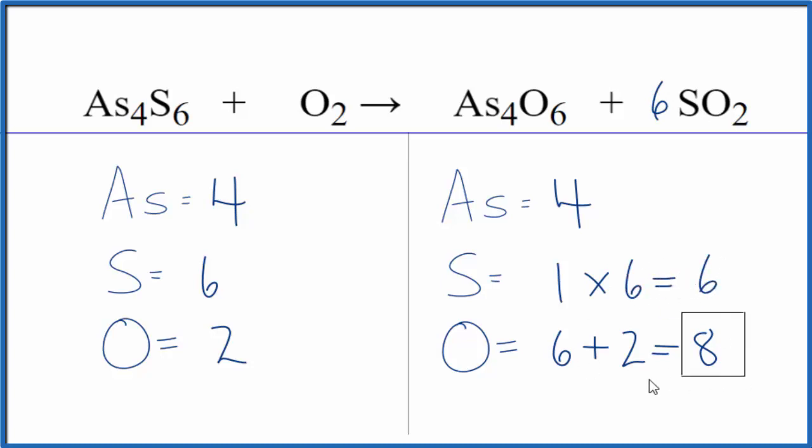...we need to update the oxygens. So we have the six oxygens here plus we have six times two, that's twelve, so we have eighteen oxygen atoms. What's nice is we've left the oxygen till last, it's all by itself. We want to get eighteen oxygen atoms...